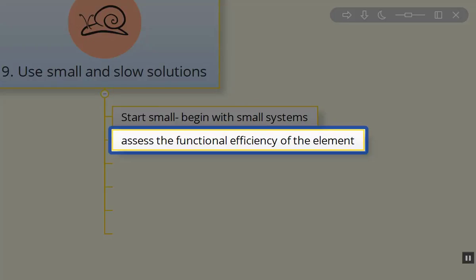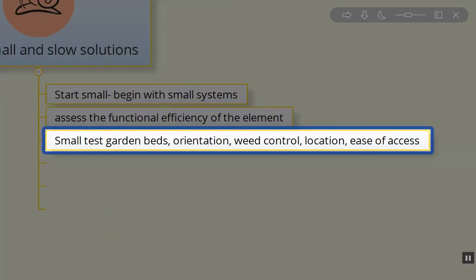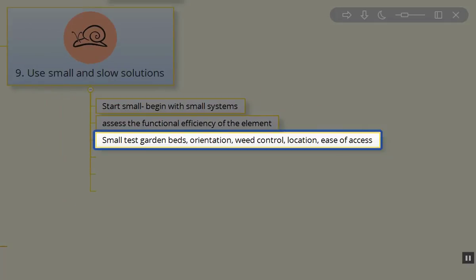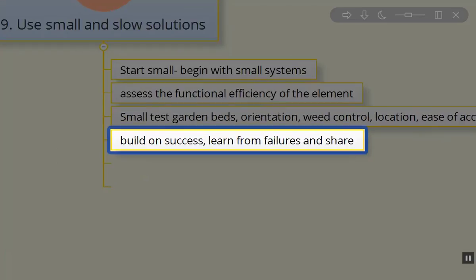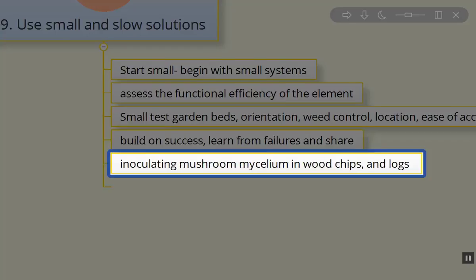How are you able to meet the water needs? Are you getting enough sun to the plants that you're growing? Start with small test garden beds, the orientation, the weed control, the location, the ease of access, irrigation as well. Build on success and learn from your failures. Share your experiences with others.